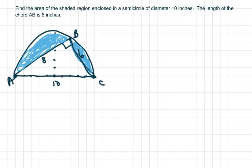So basically, the area of the semicircle equals one half πr². Since the diameter is 10, my r equals 5, so I get one half of 25π, so that's going to be in inches squared.